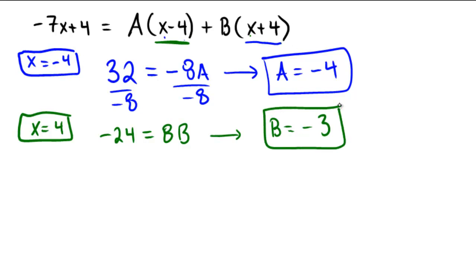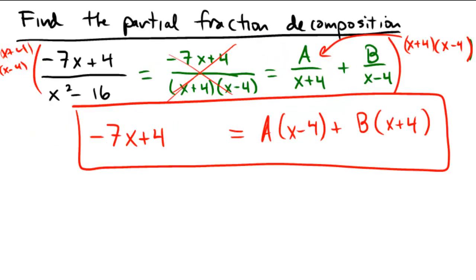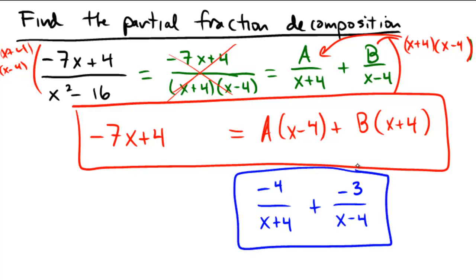So remember, A equals negative 4, B equals negative 3. And that means we can go back to the original problem, and we now know what the A and the B are. So the A was negative 4 over x plus 4, and the B was negative 3 over x minus 4. And that is a partial fraction decomposition.